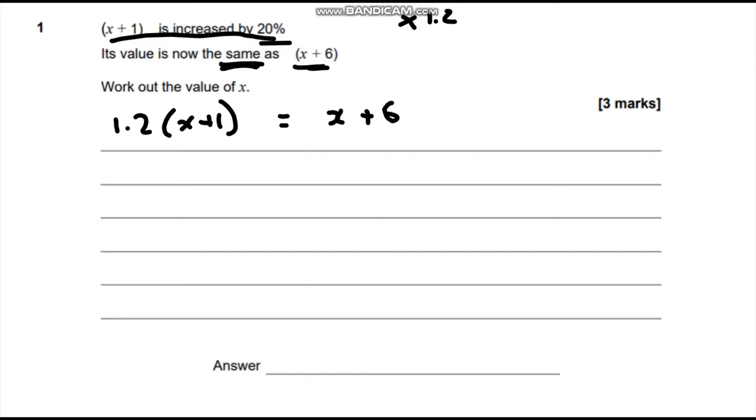Now we've got an equation we can solve it. We're going to expand our brackets. 1.2 times x is 1.2x. 1.2 times 1 is plus 1.2. And that still equals x plus 6.